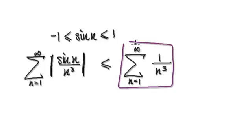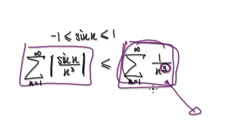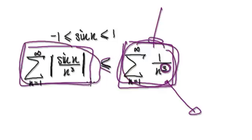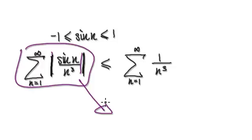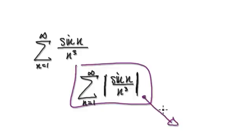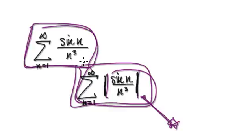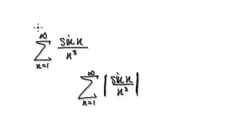This absolute value term will always be less than or equal to 1, so the series with the absolute value is always less than or equal to the simpler series. We can therefore say the simpler series is bigger or equal to the absolute series. Because the p-value here is greater than 1, the simpler series converges. If the simpler series converges and is bigger than the absolute series, then the absolute series also converges. Going back, since the absolute version converges, the theorem tells us the original alternating series with sine of n will also converge.